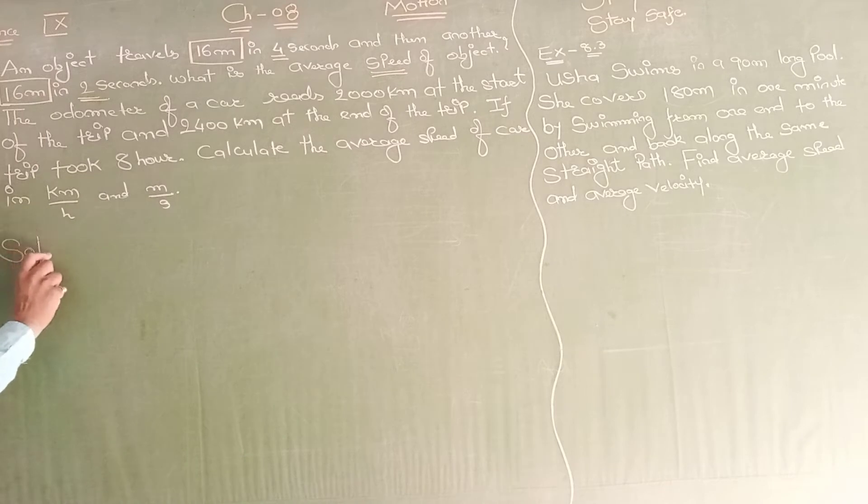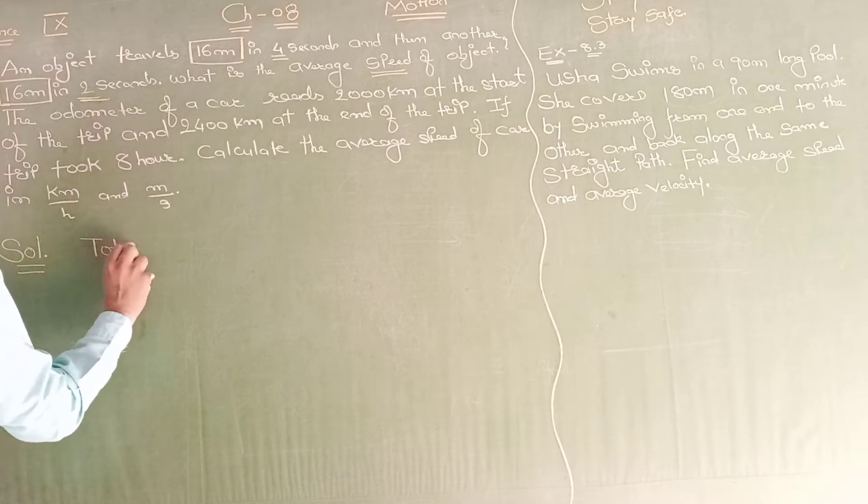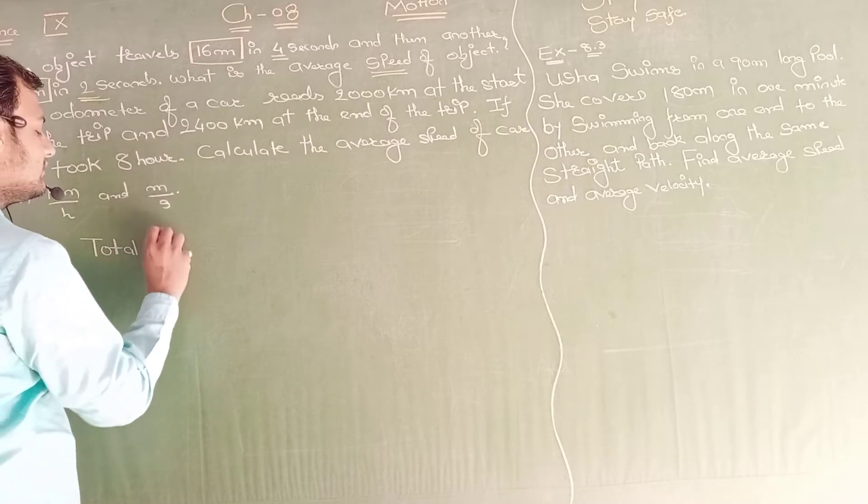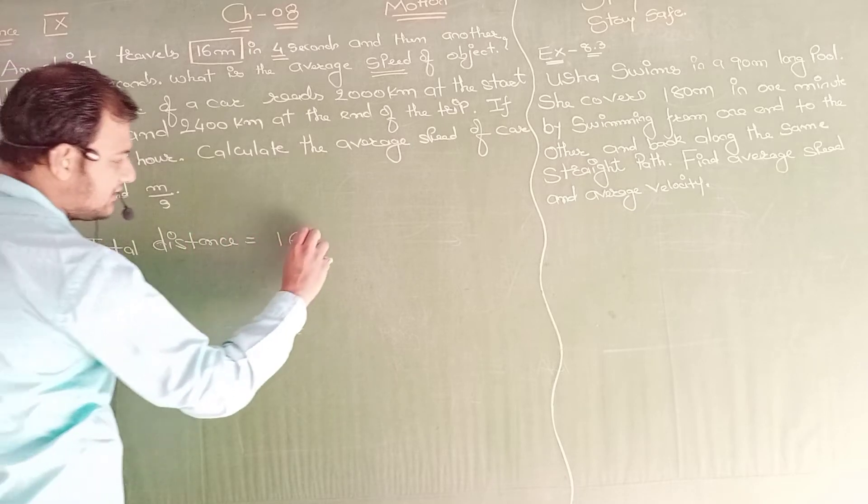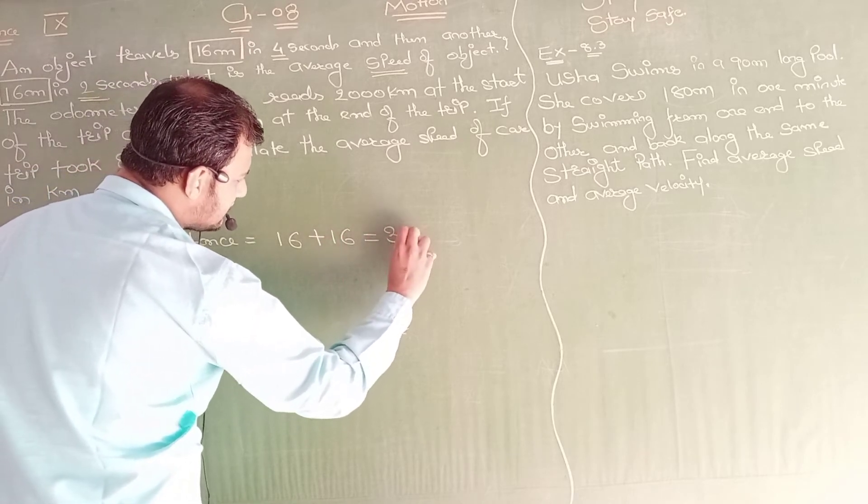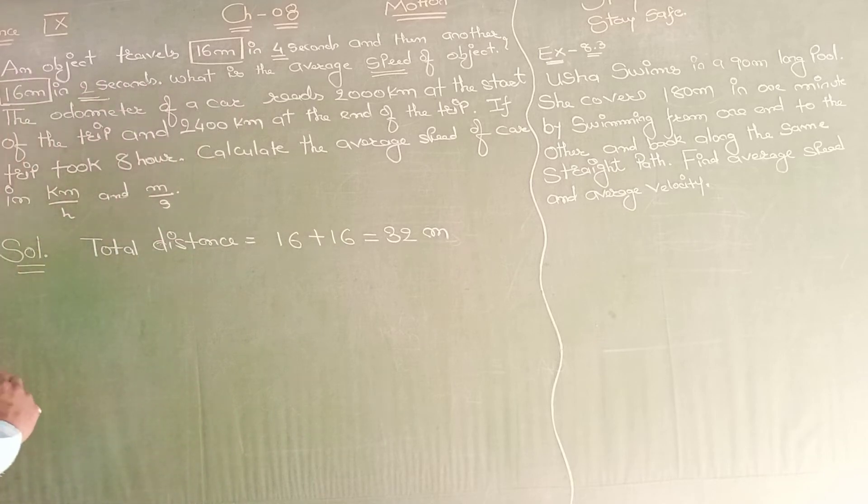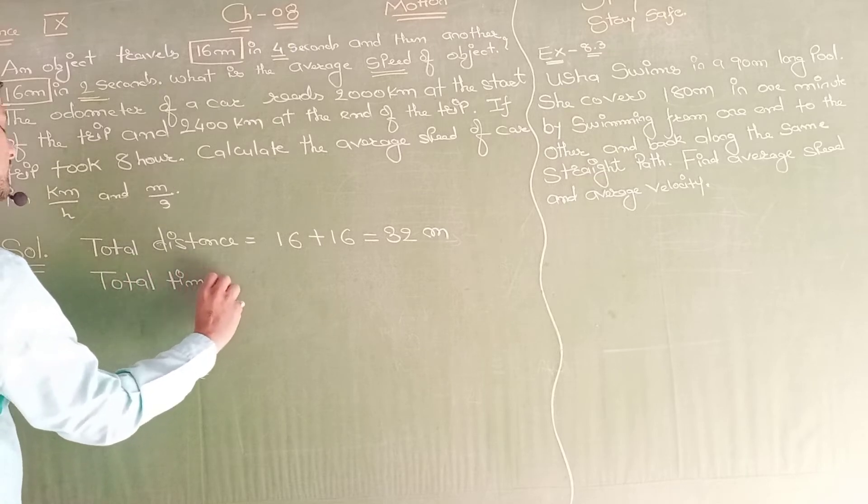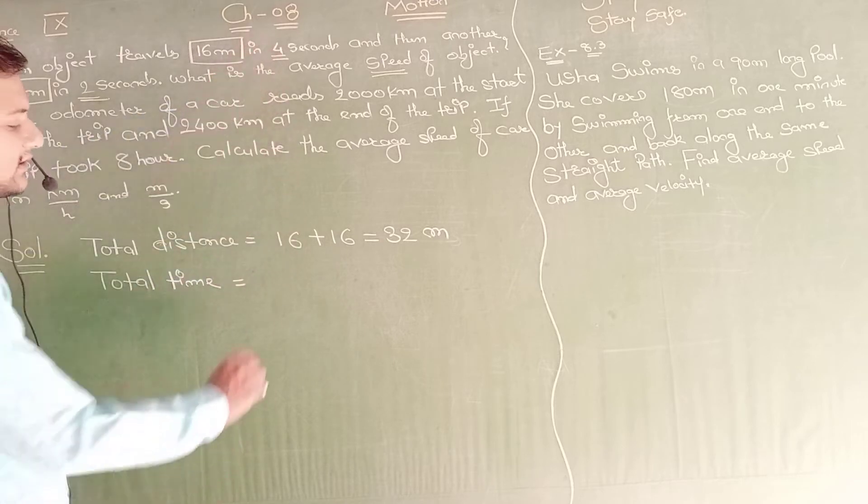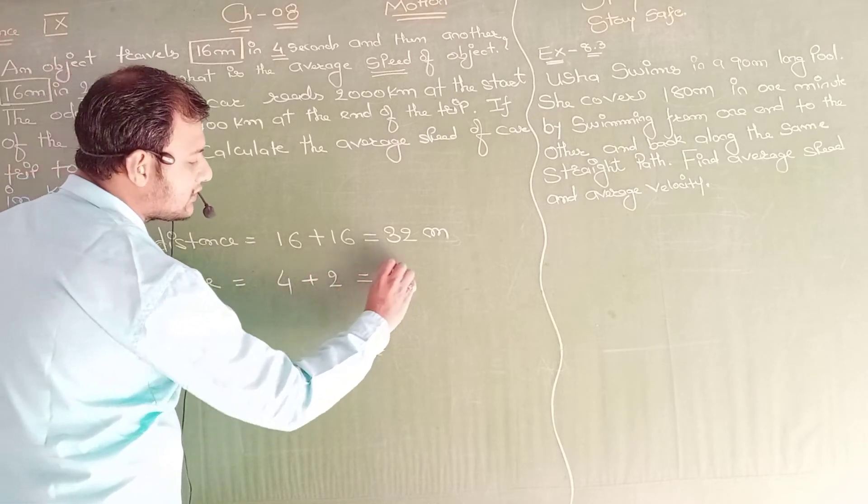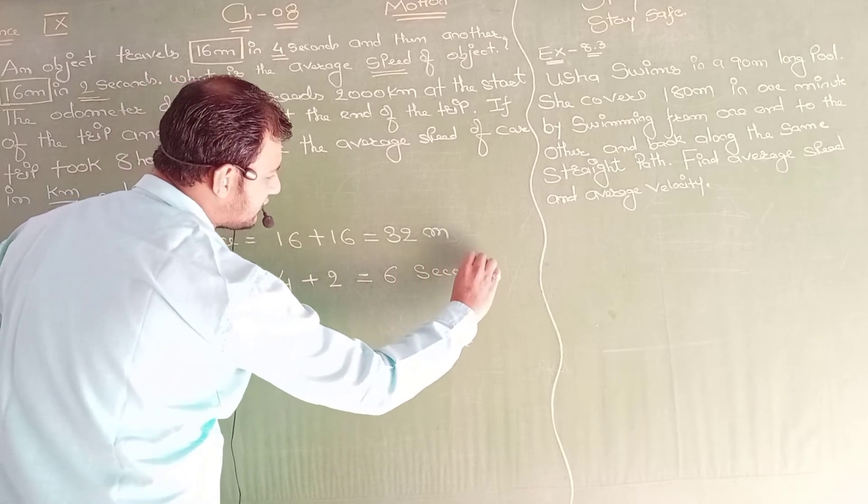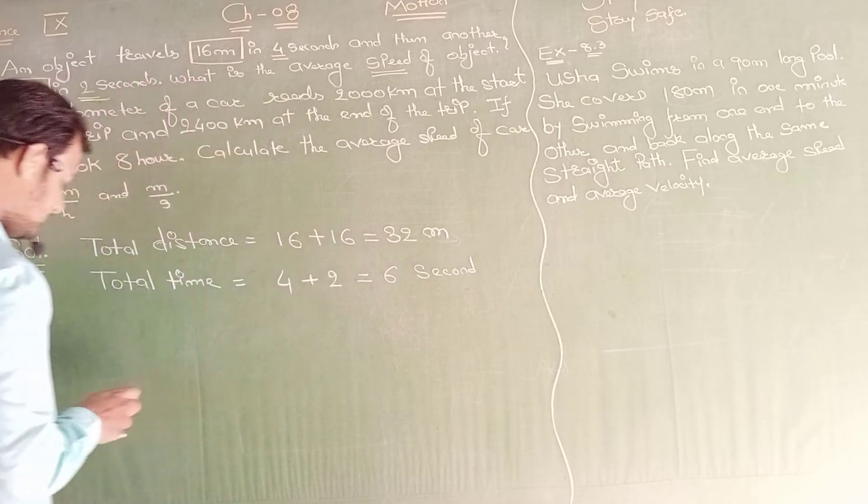Here is the solution for example 8.1. Total distance equals to 16 plus 16, which is 32 meters. Total time - first 16 meters was traveled in 4 seconds, second 16 meters in 2 seconds, total 6 seconds.